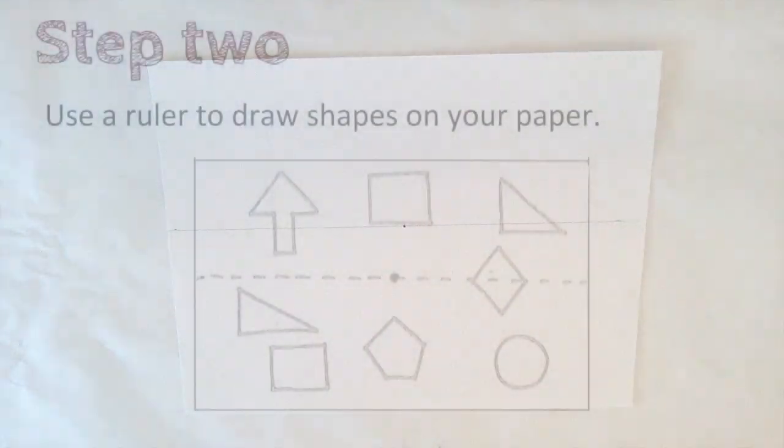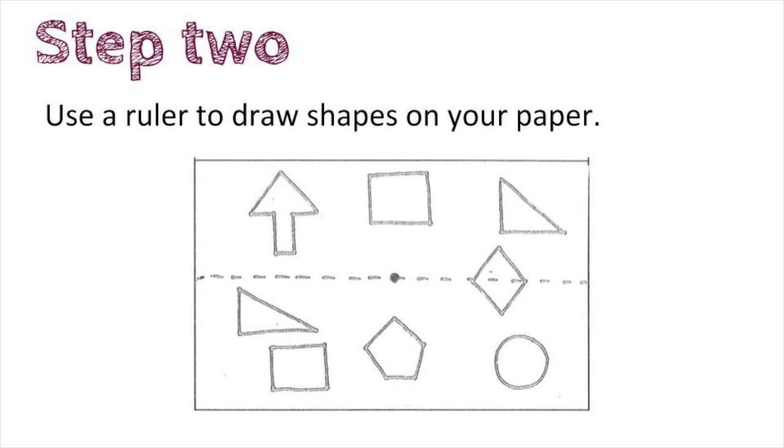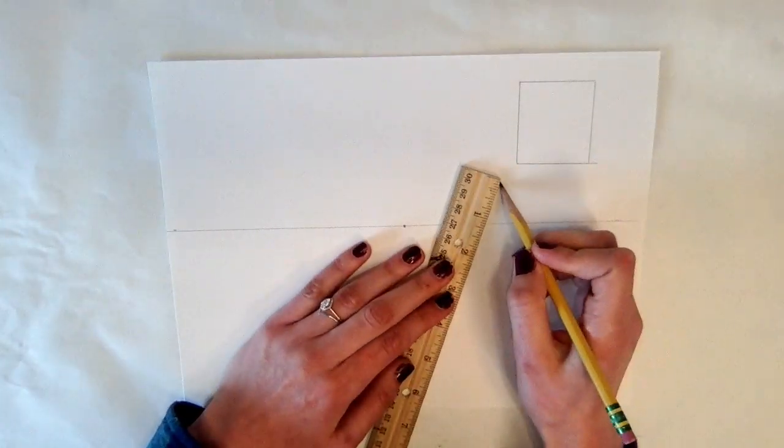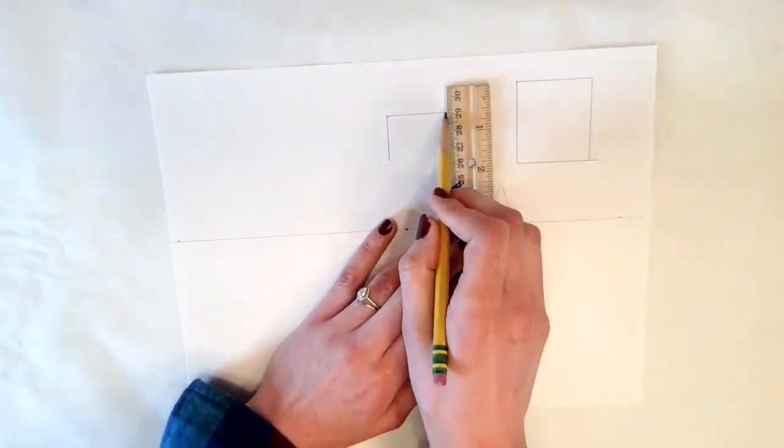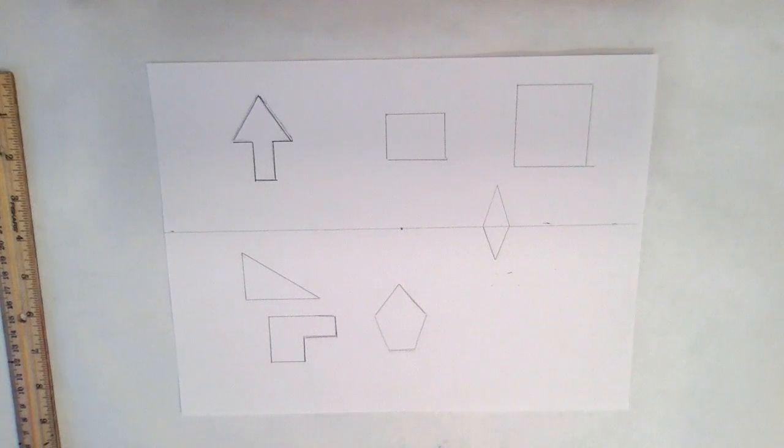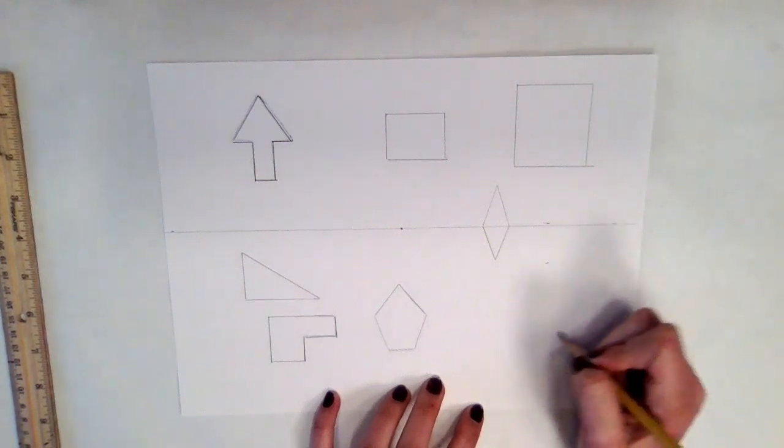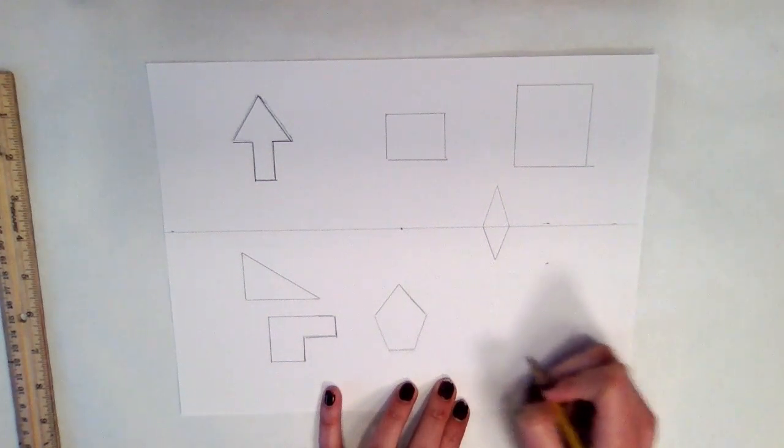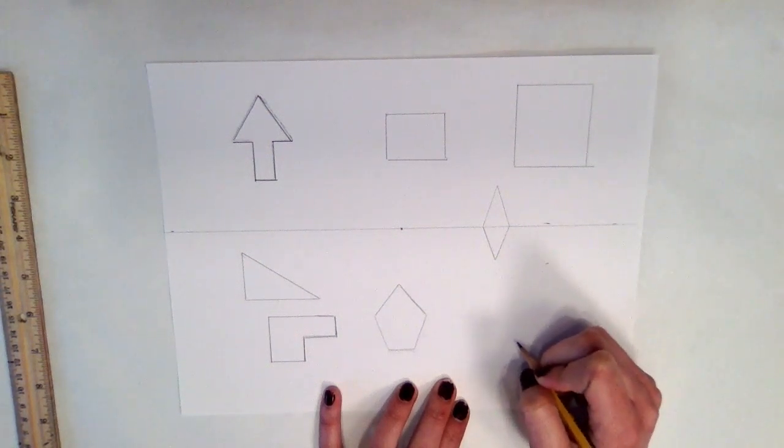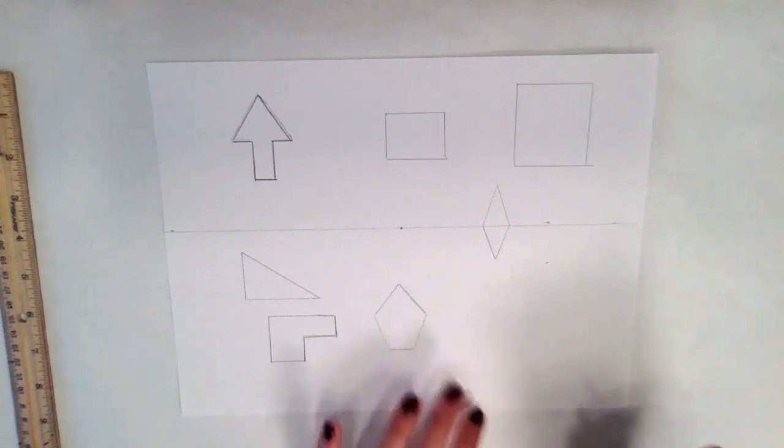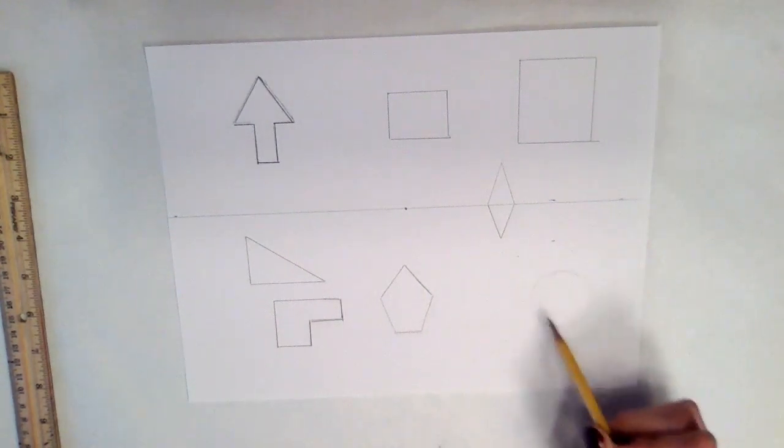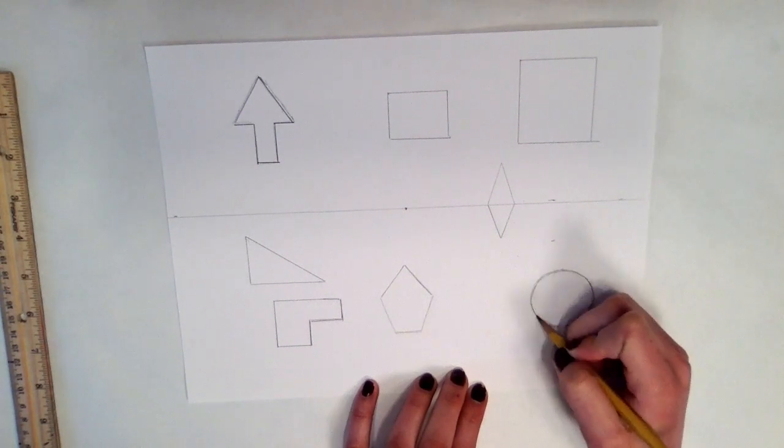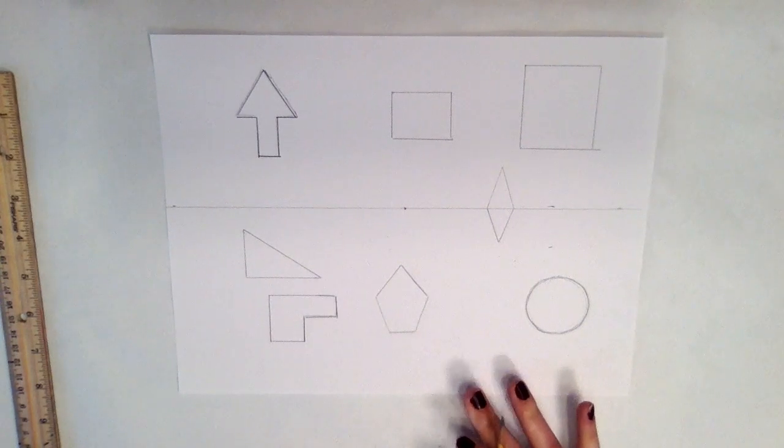The second step is to use your ruler to draw shapes on your paper. I have most of my shapes drawn and I want to show you one tip on how to draw a circle if you don't have a compass. In this corner, what I do is I move my whole arm. I don't bend at my wrist, but I move my whole arm and then I will slowly lower my hand so my pencil touches the paper. I'll just move in a repetitive motion. Once you have a bunch of sketchy lines down, then you can choose which lines you want to keep and darken those. I have my shapes on my paper and now I'm ready to move on to step three.